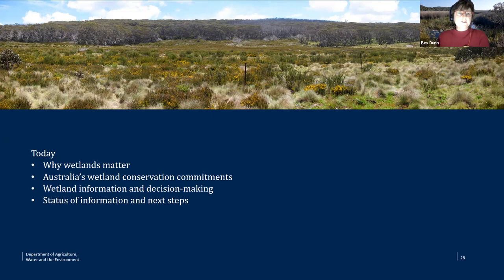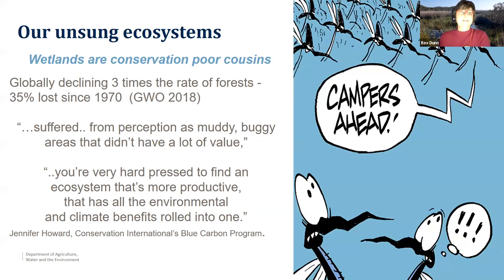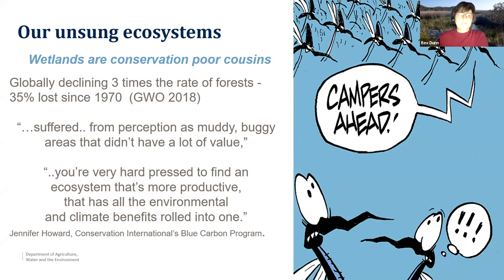Here are some headliners for you. Australia is the driest inhabited continent in the world and we don't have a handle on the extent of the very ecosystems that help us maintain water in the landscape. These ecosystems are critical not only to our survival but to all our biodiversity. And the first fact is that we're one of the last developed countries in the world that doesn't have a comprehensive wetland inventory. So why is this so? Wetlands are truly our unsung ecosystems — they're called conservation's poor cousins, but they're globally declining at three times the rate of our forests. And the Ramsar Global Wetland Outlook in 2018 estimated there's been a 35% loss since 1970. They have suffered from being seen as muddy, buggy areas — they've got an image problem. But we're now finding through the ecosystem accounts work that they're actually probably one of the most productive and most valuable ecosystems.